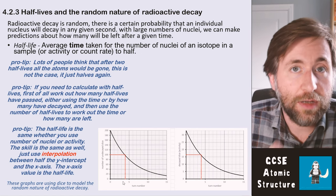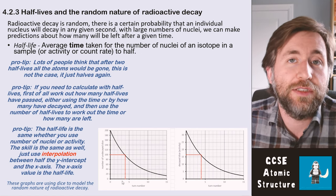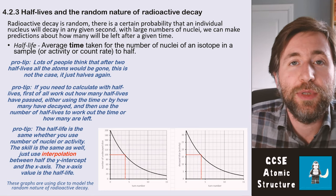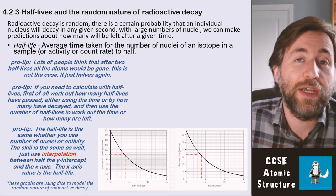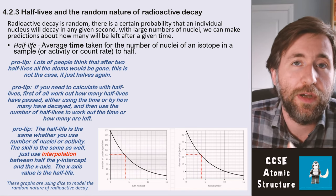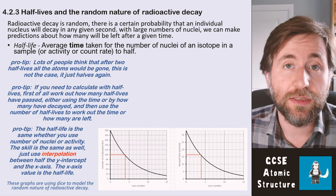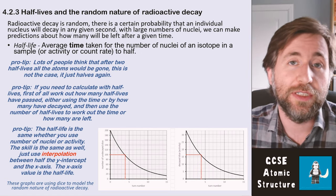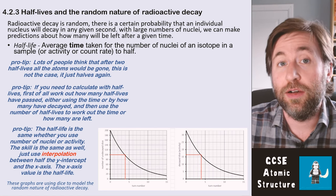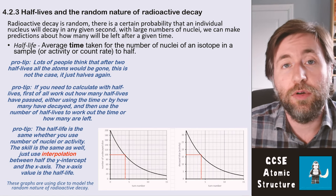These are using dice to model the random nature of radioactive decay. We can use anything that has a certain probability to model the way that large numbers of radioactive nuclei decay, because just like a dice, they have a certain probability of decaying each second. They are completely random, just like rolling a dice.